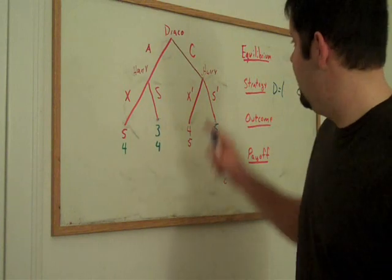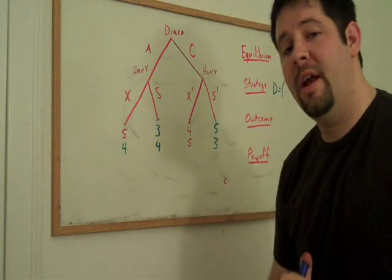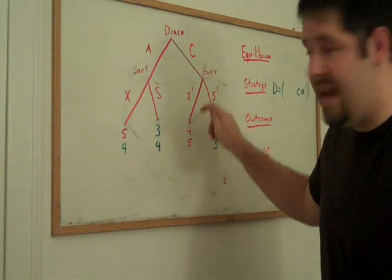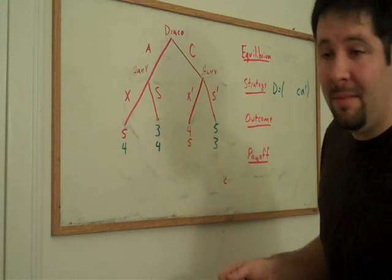Now, again, just as before, we can look at this right node that Harry has. It looks just the same as before. And what we'll see is that Harry will choose X' just as he did before.